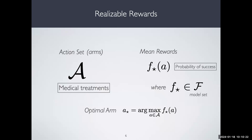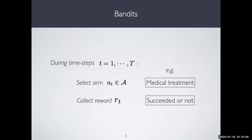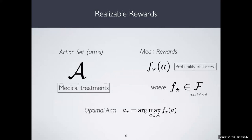In the scenario called structured bandits, we have a set of arms — the medical treatments we have access to. We assume that the mean reward, the probability of success, can be modeled as a function that lives in some function class F. Right now think of it as an arbitrary function class. The objective — what we come up with in this work — is: if I give you an arbitrary function class, how many samples do you need to learn a good action?